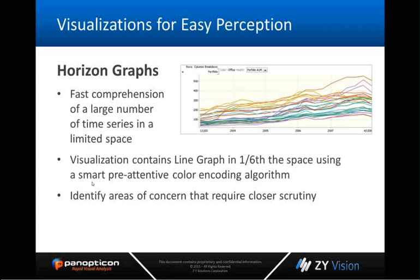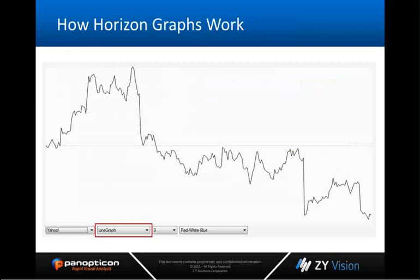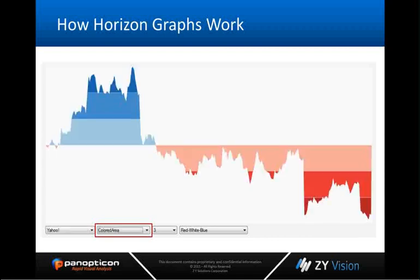When you get above five or six lines in a single graph it becomes difficult to make valid interpretations. So we invented something new called the horizon graph. It allows you to combine a number of time series data sets into a very small amount of vertical screen space. We take a single normal line graph, color code it in usually three bands — lightest color closest to the baseline, mid-range color for the middle range, and a very deep color for the highest or lowest ranges. Positive numbers are blue and negative numbers are red.